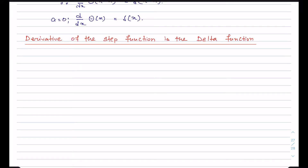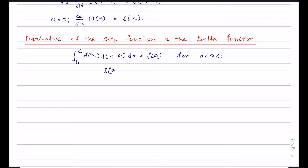Now to prove that the derivative of the step function is the delta function, we are going to use a property of the delta function: the integration from minus b to c of f(x) delta(x minus a) dx equals f(a), for a lying between b and c. For now let's assume this is true, but in the next video I will prove this relation. Here, delta(x minus a) equals the derivative of the step function theta(x minus a).